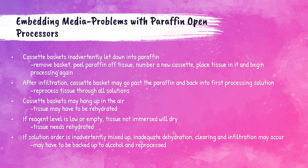Some problems can occur while processing tissues with an open processor. The cassette baskets can accidentally be placed into the paraffin instead of the starting solution. If this happens, remove the basket from the paraffin, take out each cassette, and let them cool. Once cooled, the paraffin will be solid; open each cassette and peel the paraffin off the tissue sample. After all paraffin is removed, place the tissue back in a fresh cassette and reprocess it.